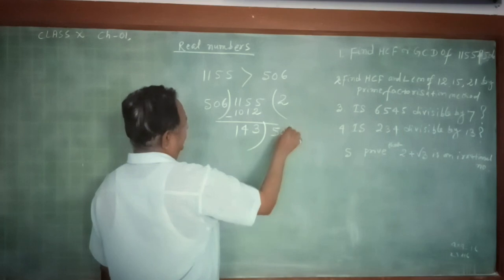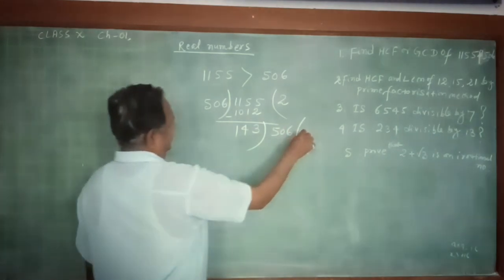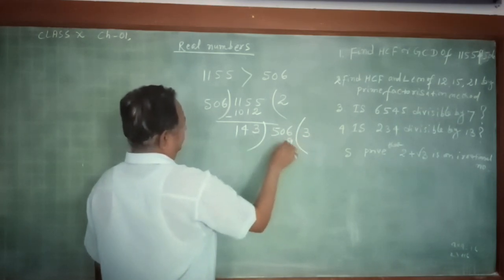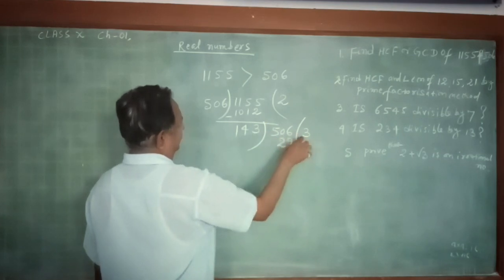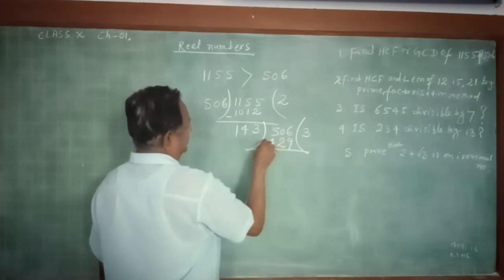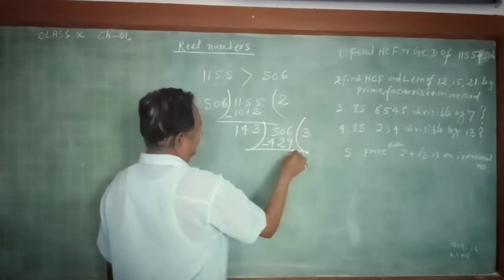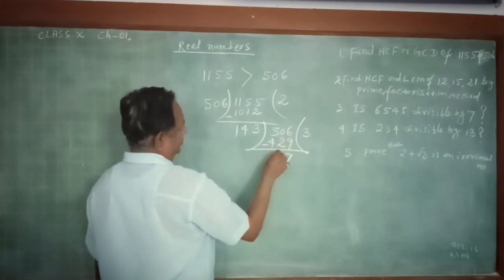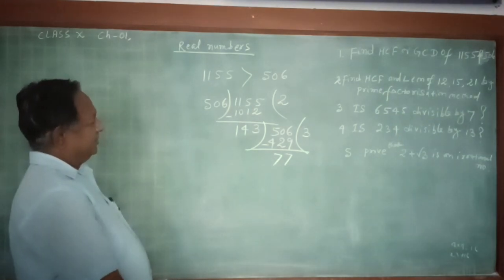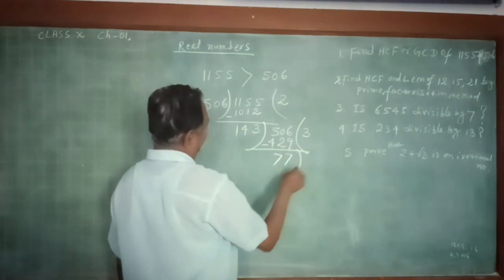Again divide 506 by 143. 143 goes 3 times: 3 times 143 is 429. Subtracting: 506 minus 429 gives remainder 77. Again, remainder is not equal to 0, so take this remainder as a new divisor.